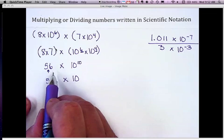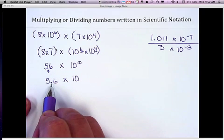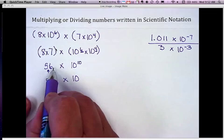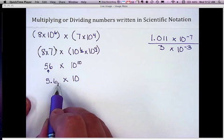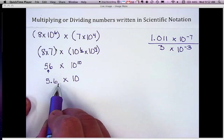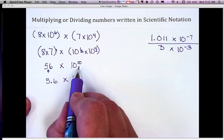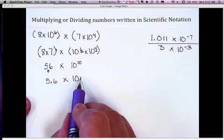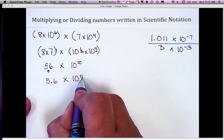But remember, I moved my decimal. So in order to take this decimal and put it back to where my original number was, 56, I would have to take it from where I have it now over one place to the right. So I need to go one more place to the right. So I already had to the 10th power, plus an additional place to the right would give me 10 to the 11th power.